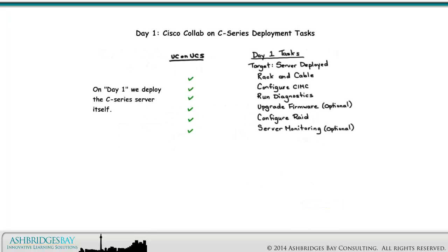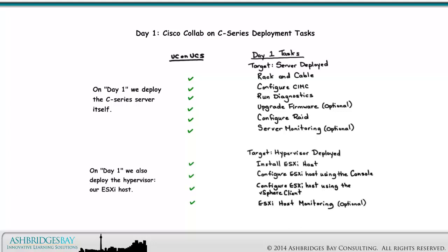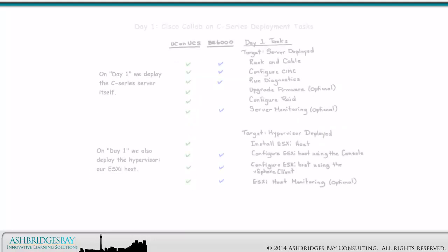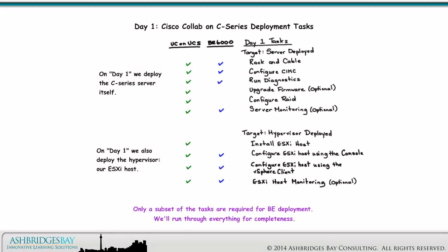Here are the Day 1 tasks for Cisco Collab on C Series. On Day 1, we deploy the C Series Server itself. On Day 1, we also deploy the Hypervisor, our ESXi Host. Only a subset of the tasks are required for BE deployment. We'll run through everything for UC on C Series.